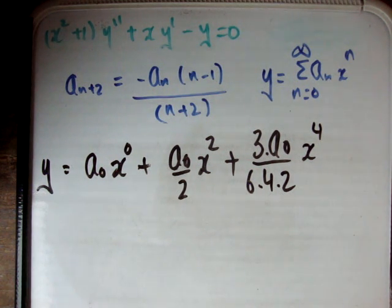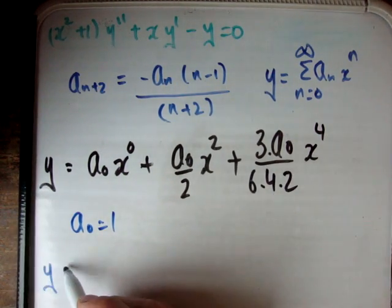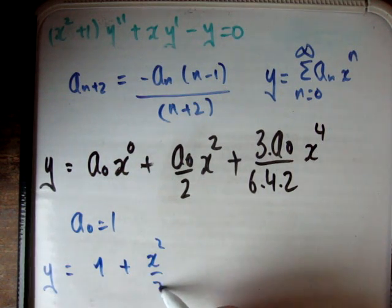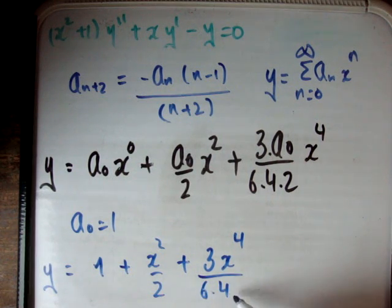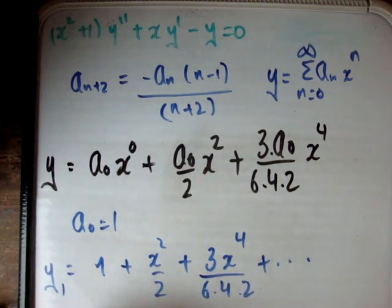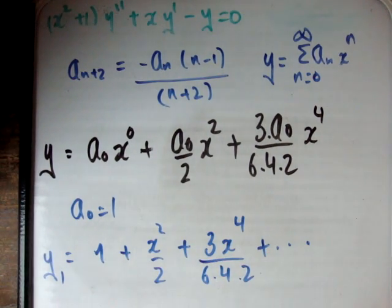It's like taking different values of a 0 and a 1. If you were to say let a 0 equal to 1, then your power series would be 1 plus x squared over 2 plus 3x to the 4 over 6 times 4 times 2 plus dot dot dot, and you can leave that as your answer — that would be y1. Thanks for watching, please pass it on to your friends and subscribe to my channel.